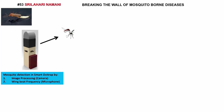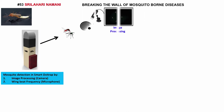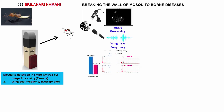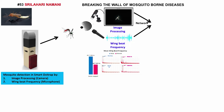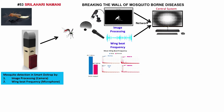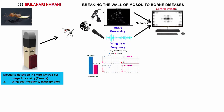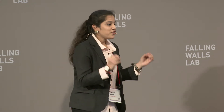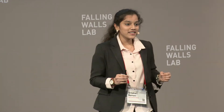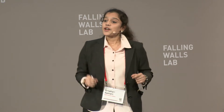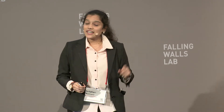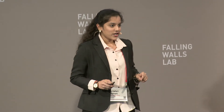The data from the Ovi-Trap is transmitted through a personal area network to an edge cloud gateway, where filtering is done, and then is transmitted to the central system through a long-haul communication medium. Image processing techniques are performed for identification of the species based on its morphological features. Along with that, wing-beat frequency is also taken into consideration.